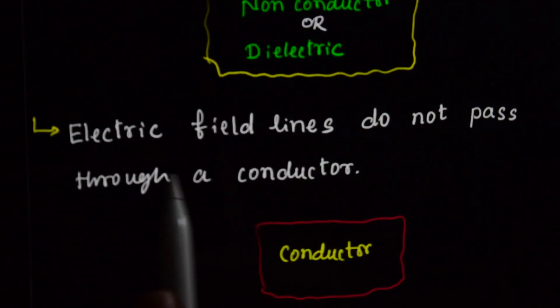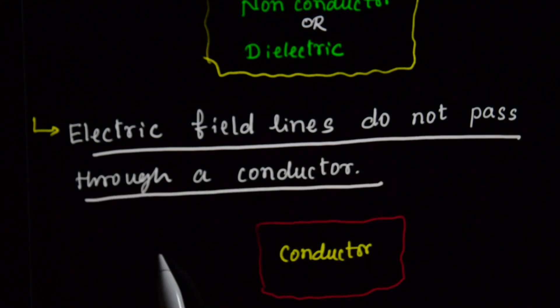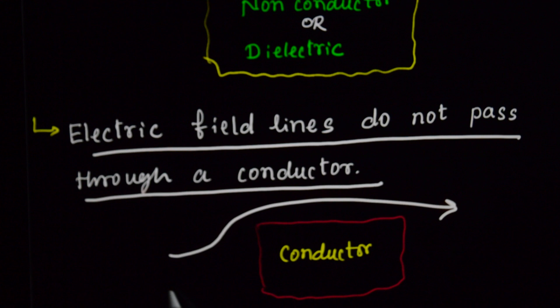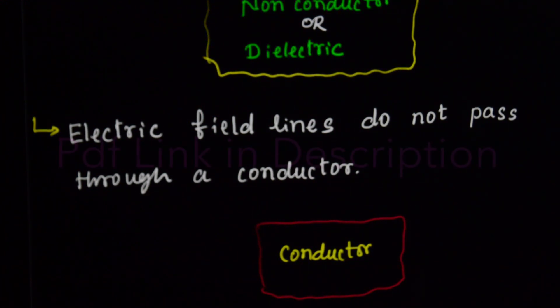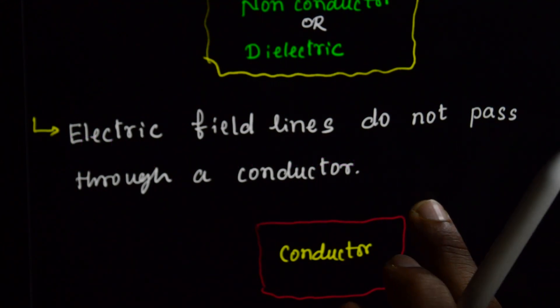And next, fifth property. Electric Field Lines do not pass through a conductor. Conductor through pass. Electric Field Lines do not pass through a conductor. These are the properties of Electric Field Lines.